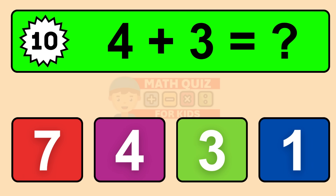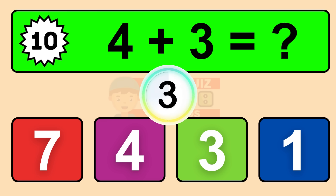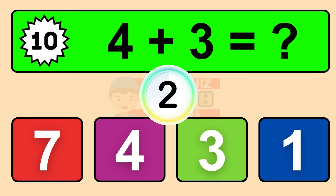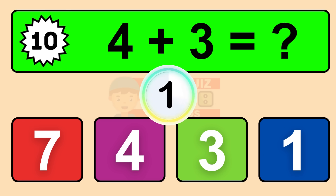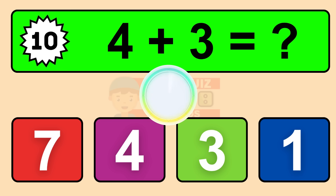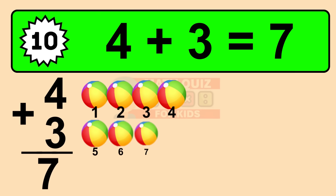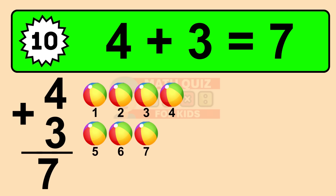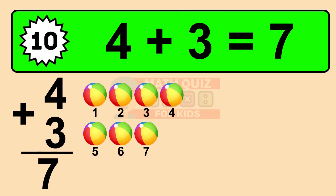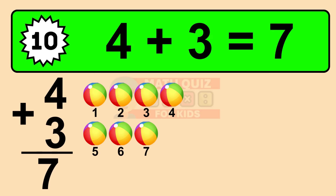Question ten: four plus three equals what? The answer is four plus three is seven. Let's count it. One, two, three, four, five, six, seven.